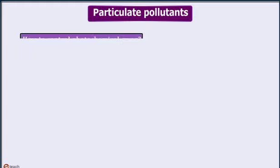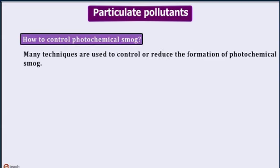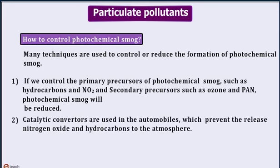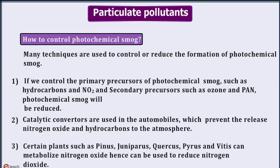Many techniques are used to control or reduce the formation of photochemical smog. If we control the primary precursors such as hydrocarbons and NO2, and secondary precursors such as ozone and PAN, photochemical smog will be reduced. Catalytic converters are used in automobiles to prevent the release of nitrogen oxides and hydrocarbons into the atmosphere. Certain plants such as Pinus, Juniperus, Quercus, Pyrus, and Vitis can metabolize nitrogen oxides, and hence can be used to reduce nitrogen dioxide levels.